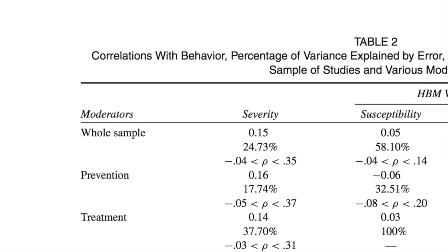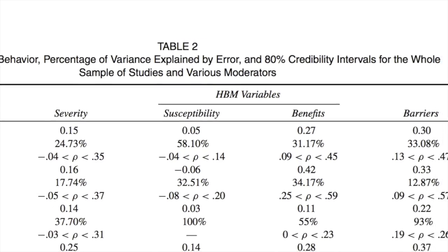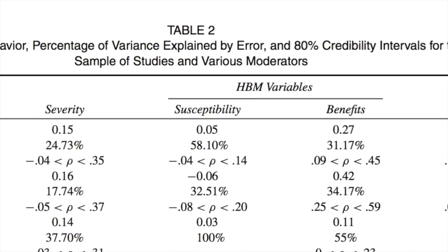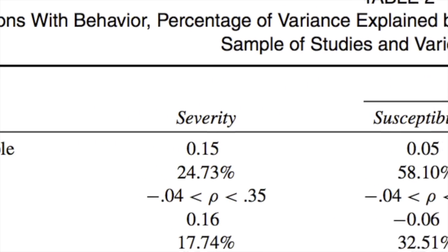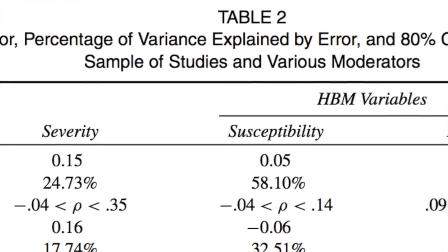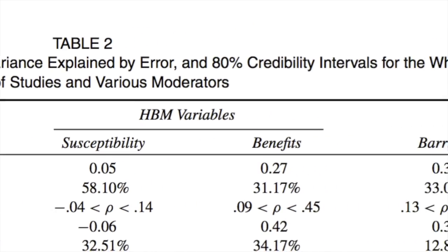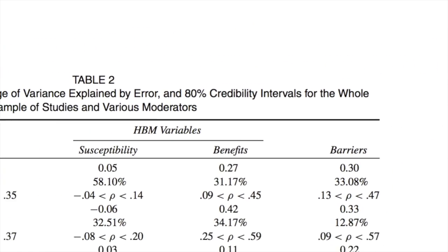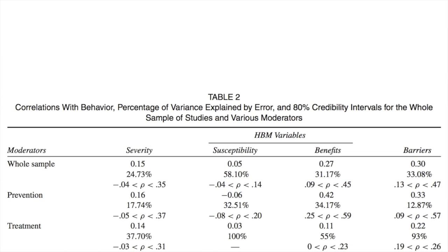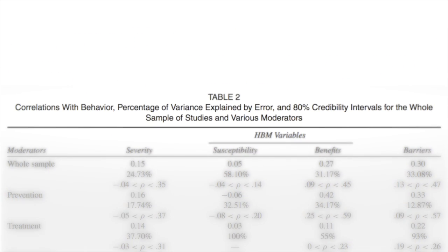Across the top you can see the main independent variables — the predictors, the things that we're hoping we can change — things like perceived severity, perceived susceptibility, benefits and barriers. Looking at the title, it's talking about correlations, the percentage of variance explained, and the 80% credibility intervals for the whole sample of studies with the various moderators.